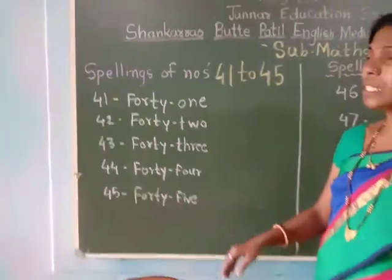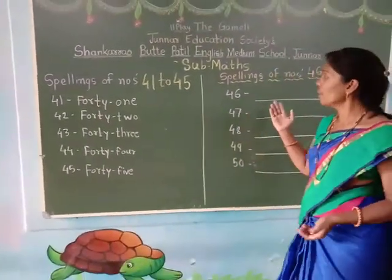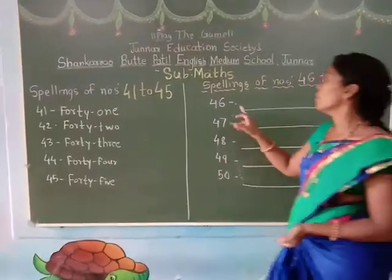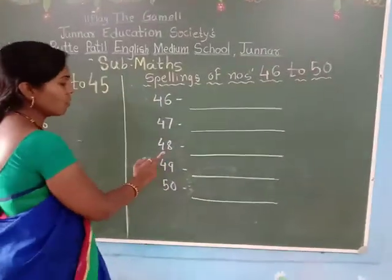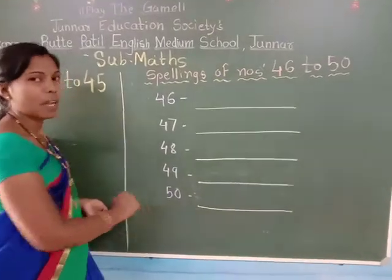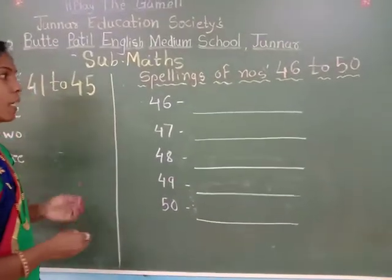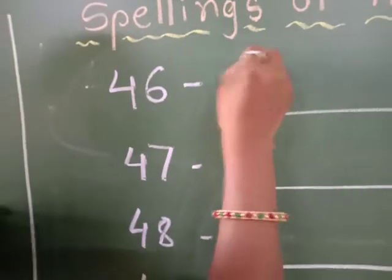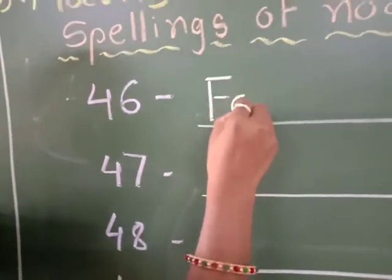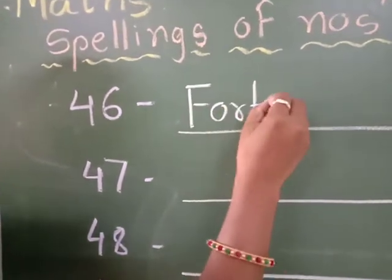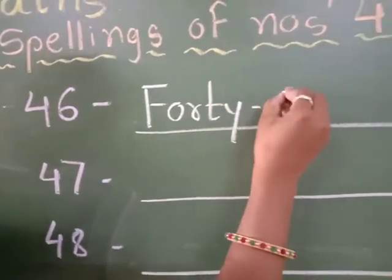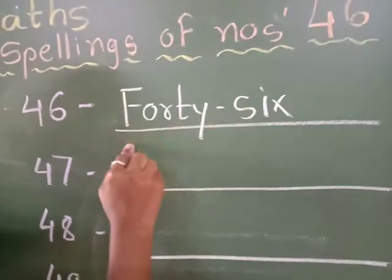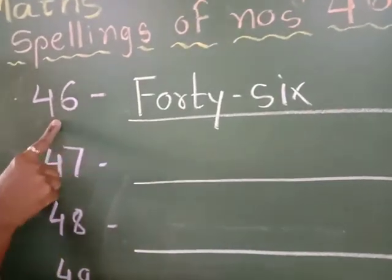Okay students. Today we are going to write next number spellings — that is 46, 47, 48, 49, and 50. So tell me what is the spelling of 40? F-O-R-T-Y, and then S-I-X, 46.